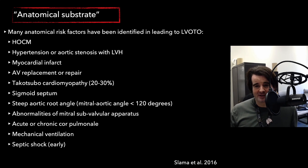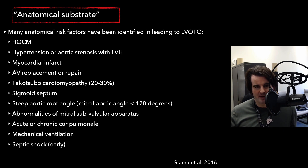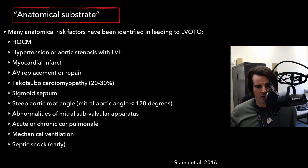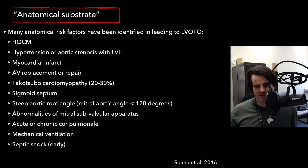Many anatomical risk factors have been identified for left ventricular outflow tract obstruction, including HOCM, hypertension or aortic stenosis with a thick ventricle, myocardial infarction where the basal LV has hyperkinesis to counteract distal dysfunction, aortic valve replacement or repair, Takotsubo where basal segment contractility increases, a sigmoid septum with a large knuckle at the base of the septum responding to inotropes, a steep aortic root angle — often seen in the elderly — and acute or chronic cor pulmonale where right ventricular dilation causes obstruction of the LV cavity.